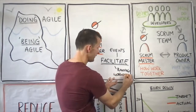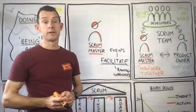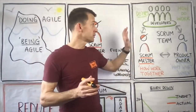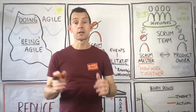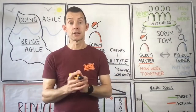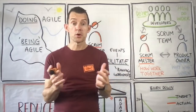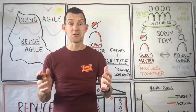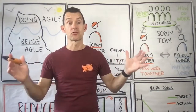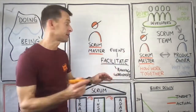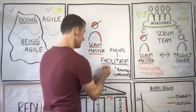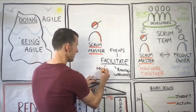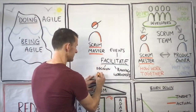The third thing they facilitate — which you may be surprised about — is decision making. The Scrum team is self-managing, and as humans, when you put a bunch of us together to make decisions, we struggle. So the Scrum Master's job is to have great techniques to help the team make decisions. Decision making is the third part of facilitation.